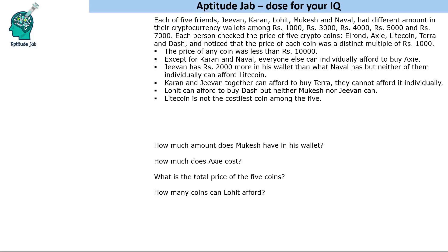Hello everyone, welcome to Aptitude Jab. This is a caselet which says that there are five coins — J, K, L, M, N — they have different amounts in their cryptocurrency wallets: 1000, 3000, 4000, 5000, and 7000. Each person checks the price of five crypto coins, which are mentioned here, and some conditions are given to us.